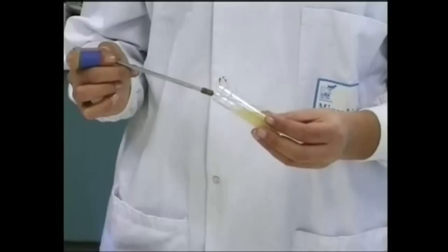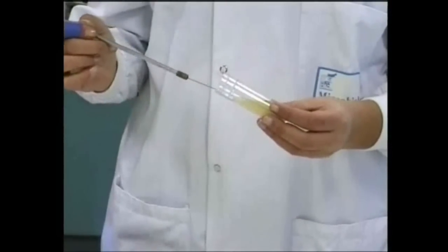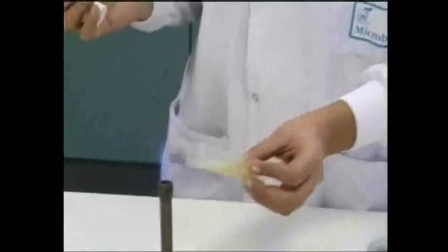The slope bottle is then opened and flamed and inoculated by drawing the loop against the surface of the agar, starting from the bottom of the slope and moving the loop from side to side towards the top. Once that has been done, the bottle neck should be flamed and the lid replaced.